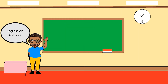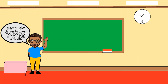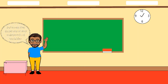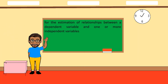Regression analysis is used for the estimation of relationships between dependent and independent variables. The formula is similar to the slope-intercept form: y equals a plus bx, where b is derived from the Pearson correlation formula, and a equals the summation of y minus b times the summation of x, all over n.